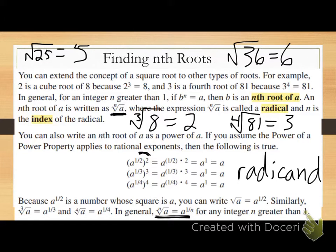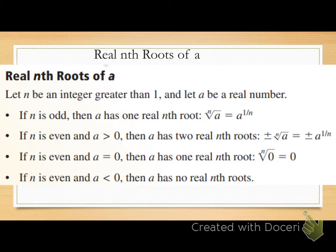In general, let n be an integer greater than one and let a be a real number — where n is my index and a is my radicand. We're talking about the nth root of a and how many real nth roots it has depending on these values.